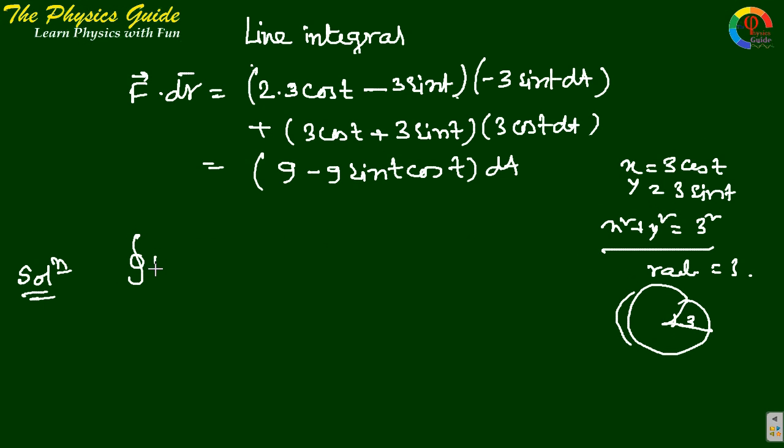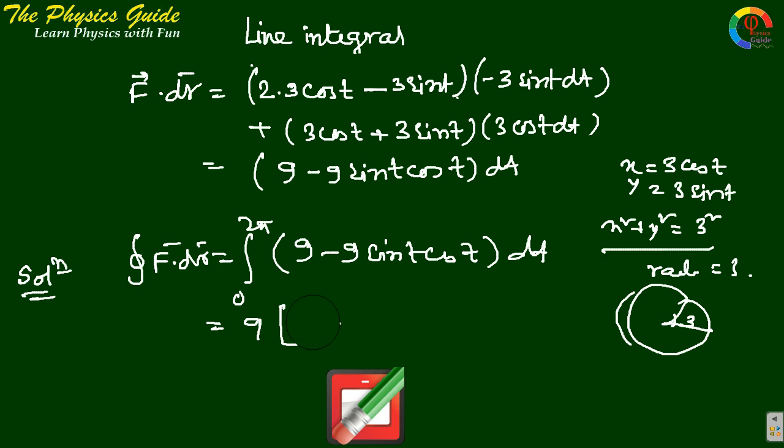The closed integral ∮F·dr = ∫₀²π [9 - 9sin(t)cos(t)]dt = ∫₀²π [9t - (9/2)sin(2t)]dt, since sin(t)cos(t) = (1/2)sin(2t). This gives [9t - (9/4)cos(2t)] evaluated from 0 to 2π.